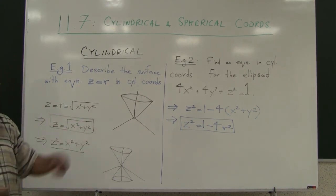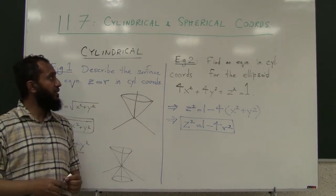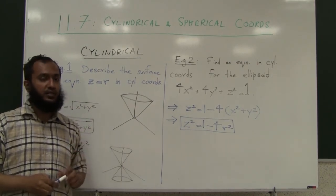Those are two examples to understand how to go back and forth in terms of surfaces using the cylindrical coordinate description system and the rectangular coordinate system. Next lecture we will continue and introduce the spherical coordinate system. Thank you.